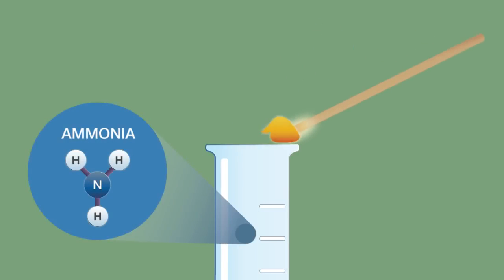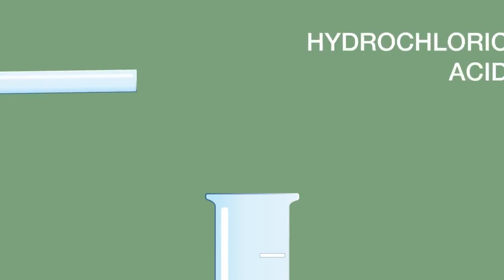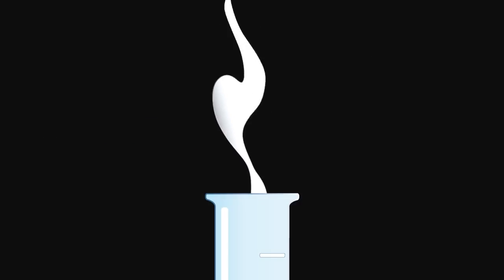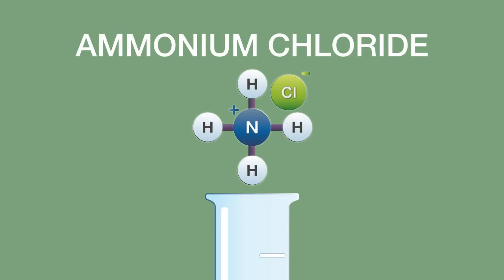Ammonia extinguishes a lit splint and turns damp red litmus paper blue. In the presence of concentrated hydrochloric acid, a white smoke will form. This is ammonium chloride and confirms the presence of ammonia.